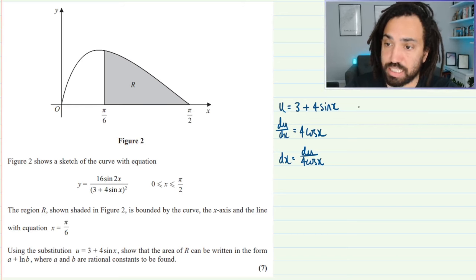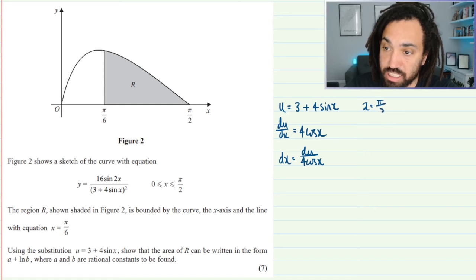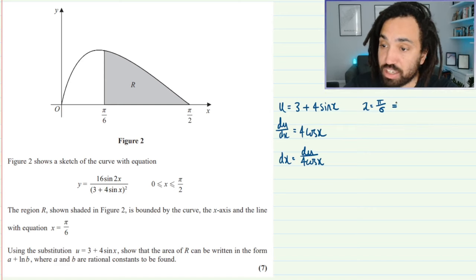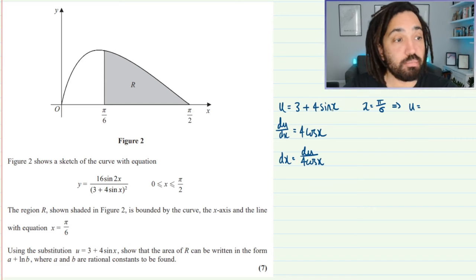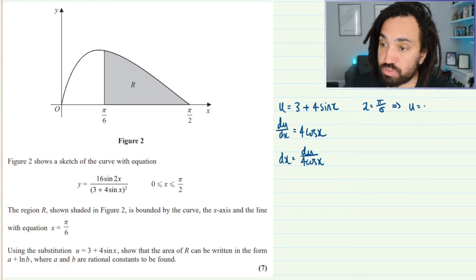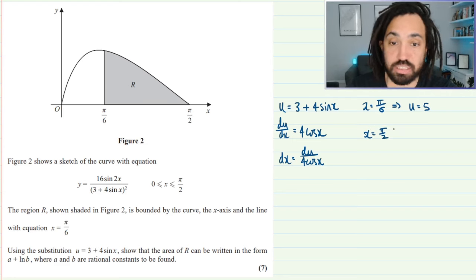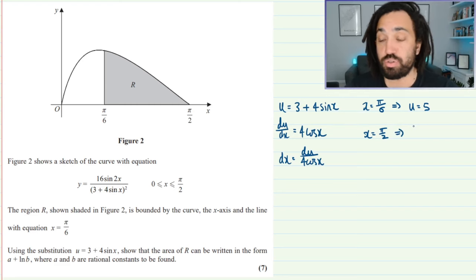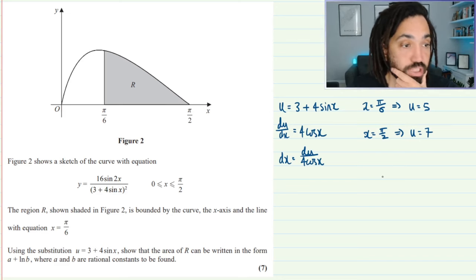What I'm going to do next is I'm going to do my limits. So I know that when x is equal to pi over 6 what value of u will that give us, so if I sub x is pi over 6 into here, pi over 6 sin pi over 6 is a half times 4 is 2 plus 3 is 5. And also when x is equal to pi over 2, when I sub that in, I get u is equal to sin pi over 2 is 1 times 4 is 4 plus 3 is 7.